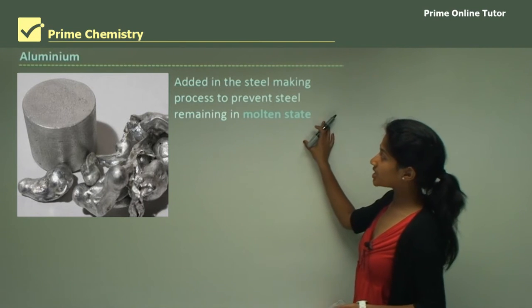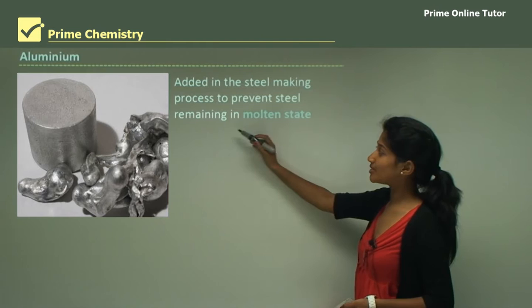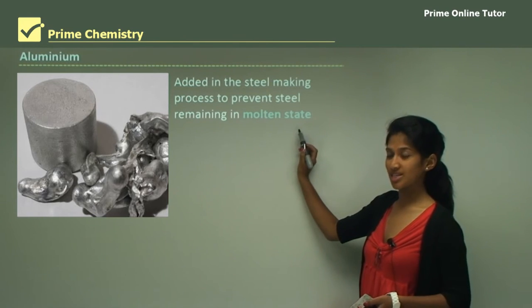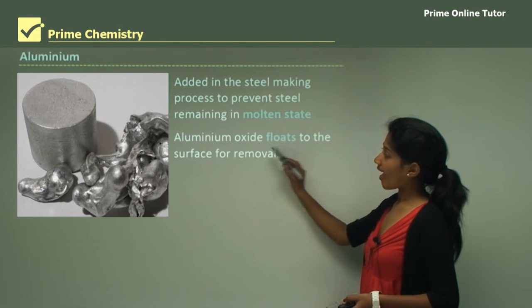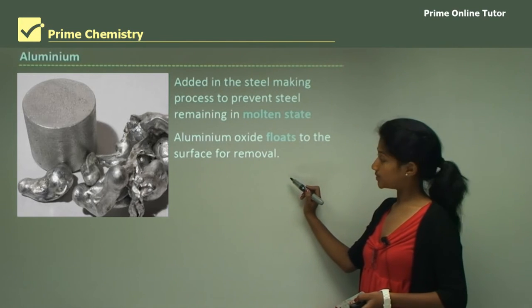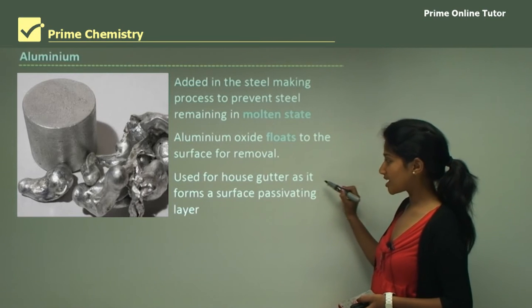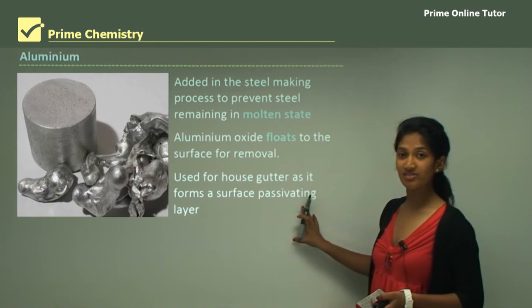Aluminium is added in the steel making process to prevent the steel remaining in its molten state. Aluminium oxide floats to the surface for removal and it is used for house gutters as it forms a surface passivating layer.